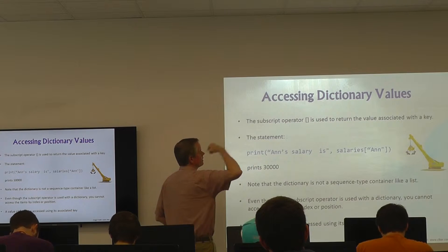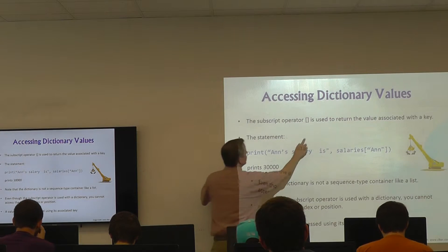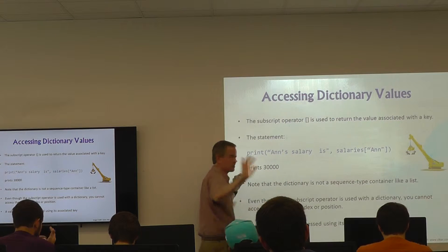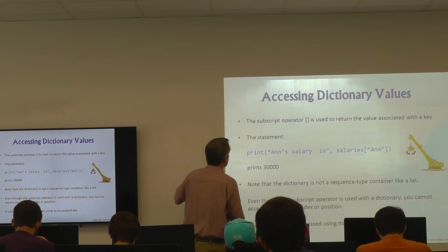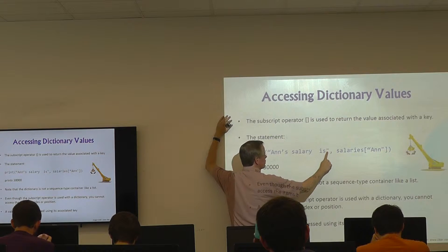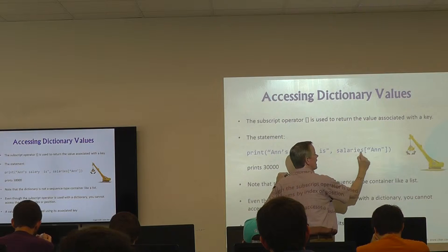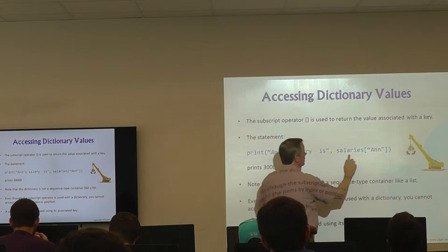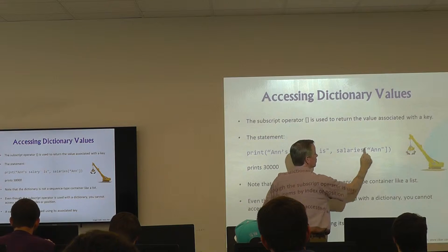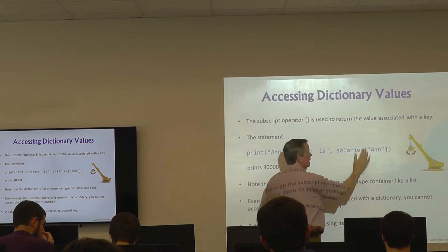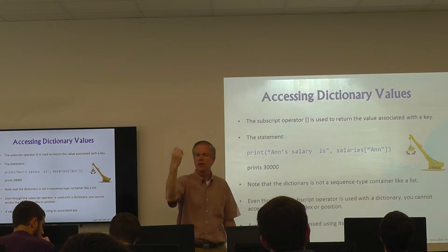How do you actually get stuff out of the dictionary after you've created it? You use the subscript operator — little square brackets — the same ones we use with lists. For example: `print('Ann salary is', salaries['Ann'])`. Salaries is our dictionary. You're providing a key, and it gives back the value. That would print $30,000.